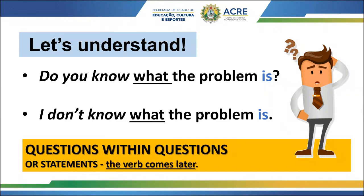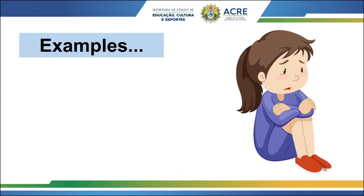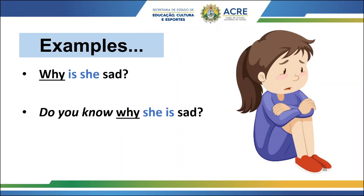Let's see some more examples. The question is: 'Why is she sad?' This is a direct question. The verb 'to be' comes before the subject: 'Why is she sad?' Then we have: 'Do you know why she is sad?' Now we have an indirect question, so the verb 'to be' goes after the subject.